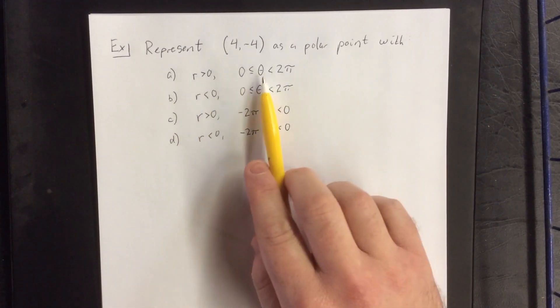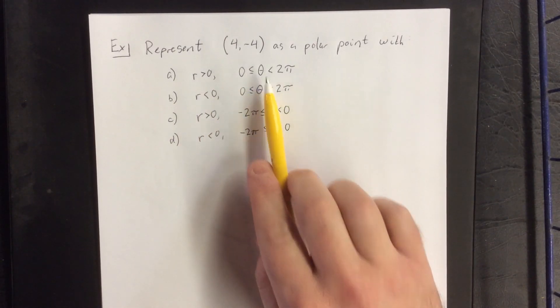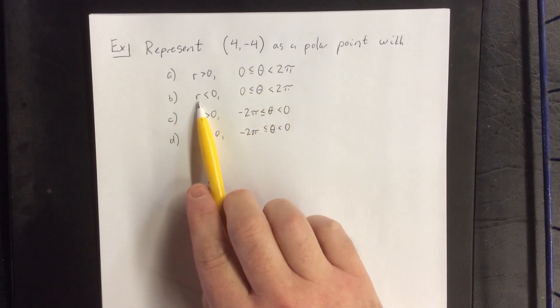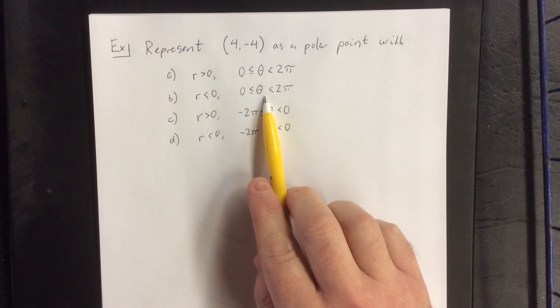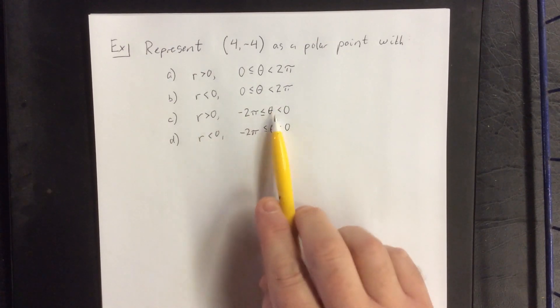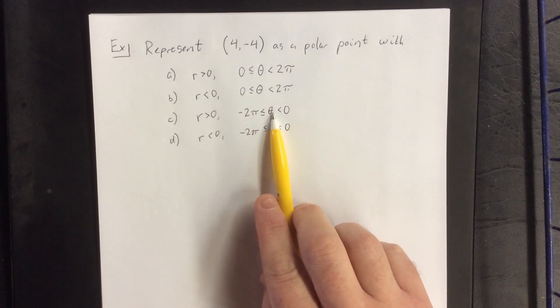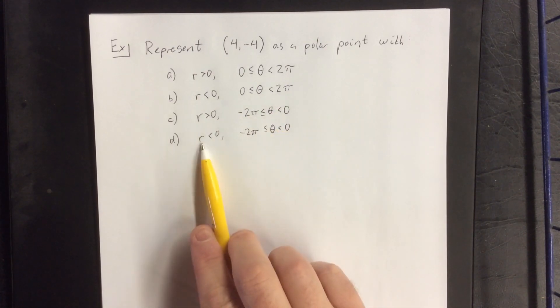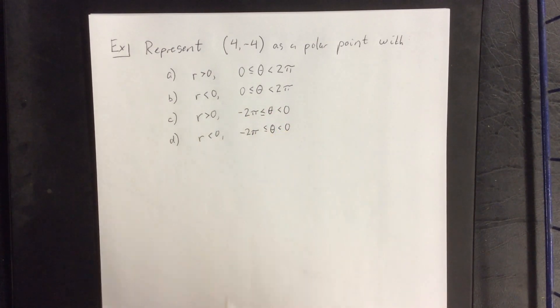A positive r with a positive theta, a negative r with a positive theta, a positive r with a negative theta, and a negative r with a negative theta.